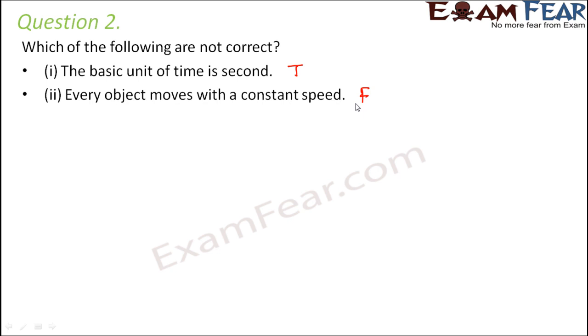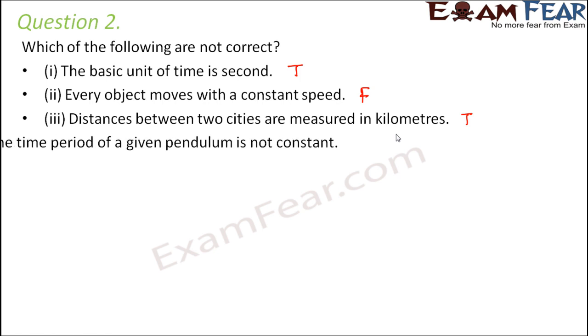That is where comes the concept of non-uniform motion. That is sometimes the object is moving very slowly. Sometimes the object is moving very fast. So basically at different intervals of time, the speed is changing. Distances between two cities are measured in kilometers. Yes, that is true because two cities are quite far apart. So they need a bigger unit of distance and kilometer is a bigger unit of distance.